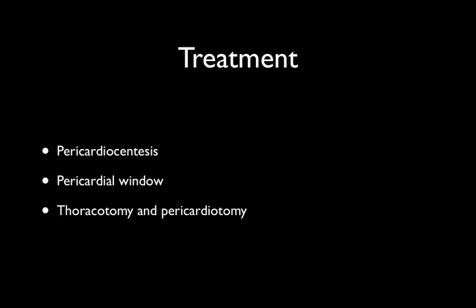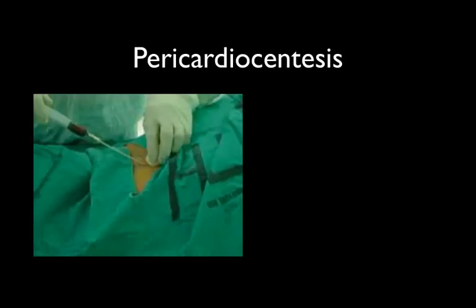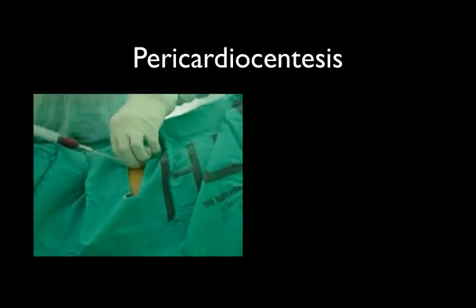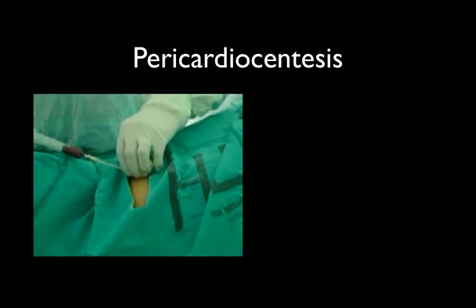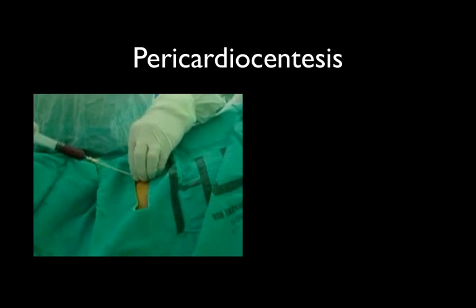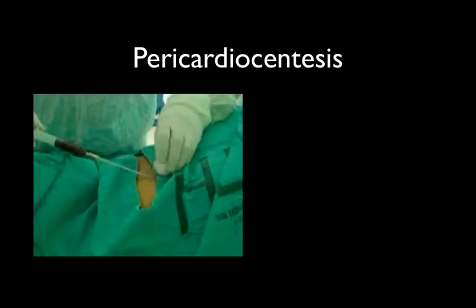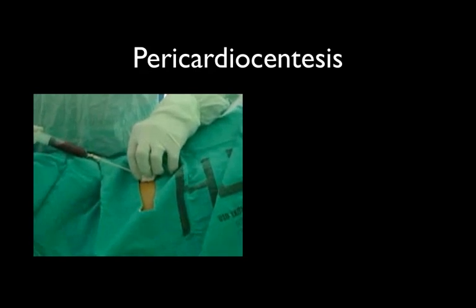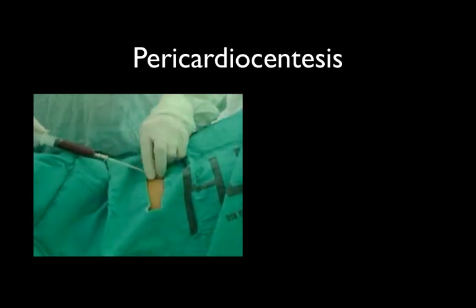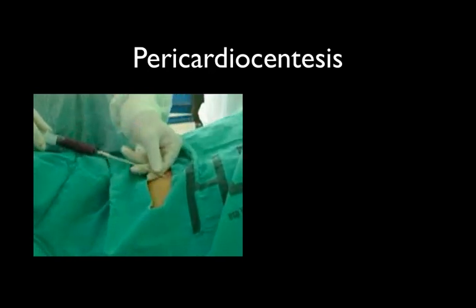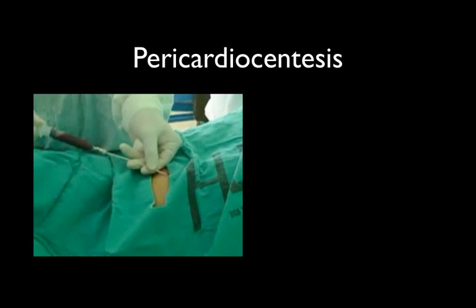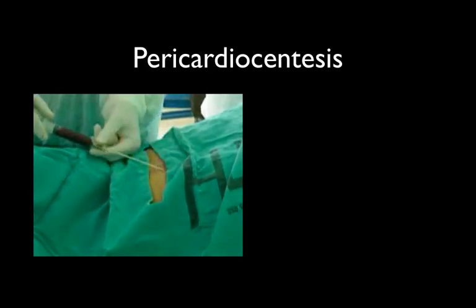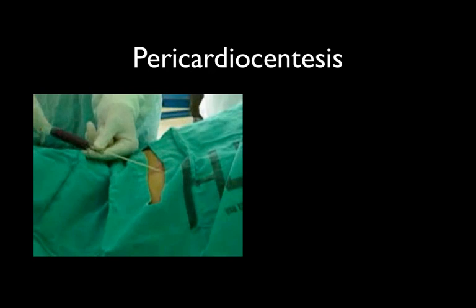In the presence of a more fluid collection, pericardiocentesis or a pericardial window are possibilities. The traditional approach is a blind subxiphoid approach with the needle directed towards the patient's left shoulder. This procedure has a quoted mortality in the order of 10% and morbidity of approximately 50%, with complications including ventricular punctures, dissection of coronary arteries, liver biopsies, transgastric puncture, and a high risk of needle-stick to the operator.